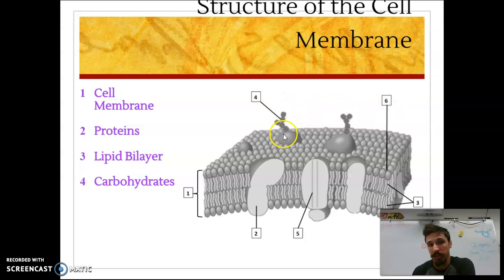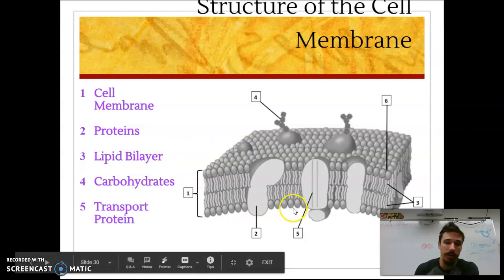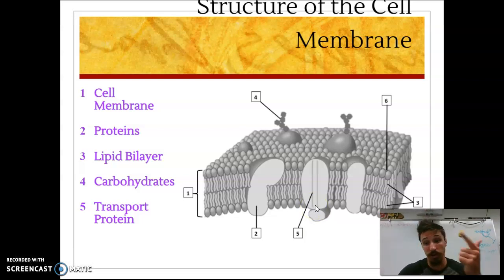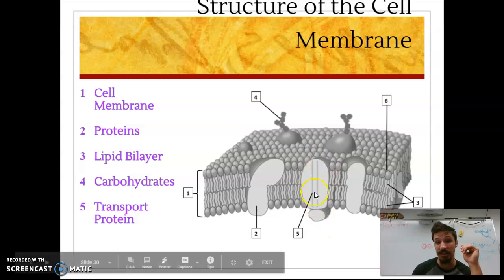Number four is carbohydrates. We have some carbohydrates attached to some of these big proteins within the membrane, and you don't really need to know so much about what those do, but just know that carbohydrates are there so that one cell can recognize another cell. Number five is a big one, and number five is kind of where we're going to head with the rest of this middle section of this unit, and that's a transport protein. This is the kind of protein right here that's going to let those very, very big macromolecules into the cell, like proteins, carbohydrates, lipids, nucleic acids. All of those are going to be able to get into the cell via these big proteins present within this cell membrane.